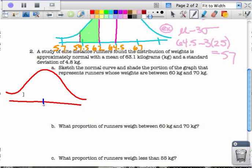This is my mean, and they tell me that my mean is 63.1. Remember that means it's mu. And then my standard deviation, 4.8, that's sigma.